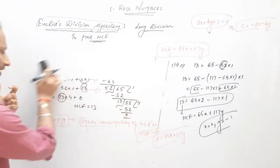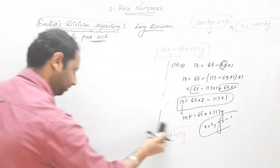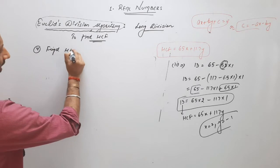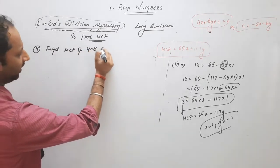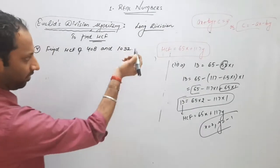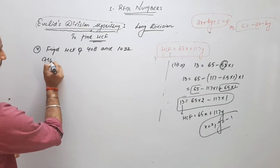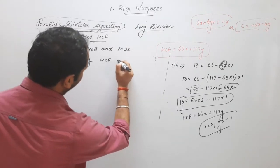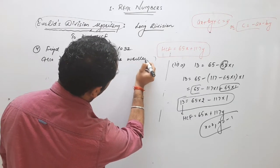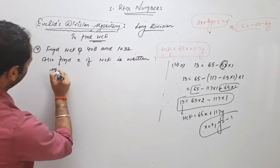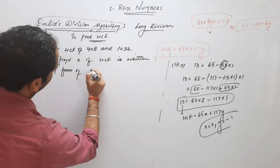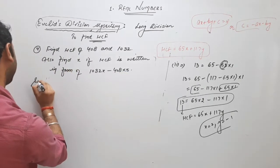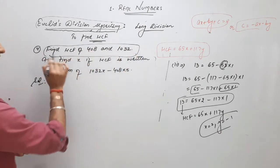This is your concept, which is important. It is a short question. I will take this question next. Find HCF of 408 and 1032, also find x if HCF is written in the form of 1032x minus 402 into 5. So this is your question, so first we have to find HCF.